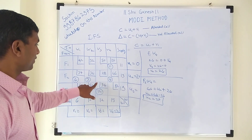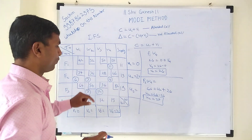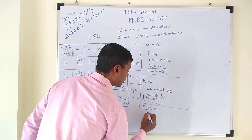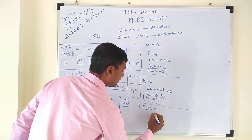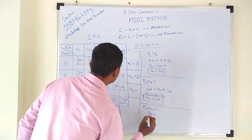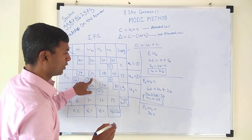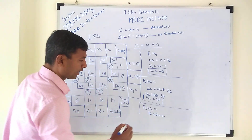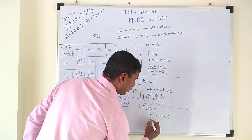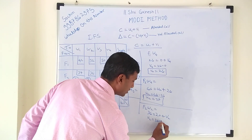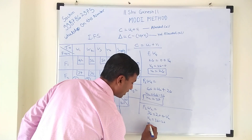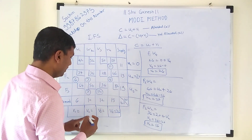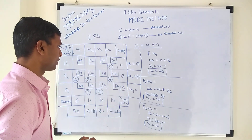In that same row, F2W2 is allocated, and we already know u2. The cost of F2W2 is 36. So: 36 = 20 + v2, which gives v2 = 36 − 20 = 16. We write v2 = 16.